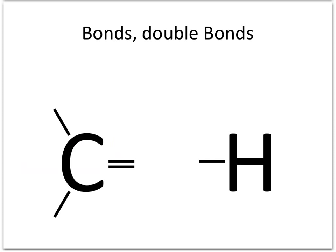Before talking about alkenes, we mentioned that carbon could make four bonds. This does not necessarily need to be four single bonds — we could have a double bond, as shown in the diagram. Hydrogen, however, can only make the one bond.